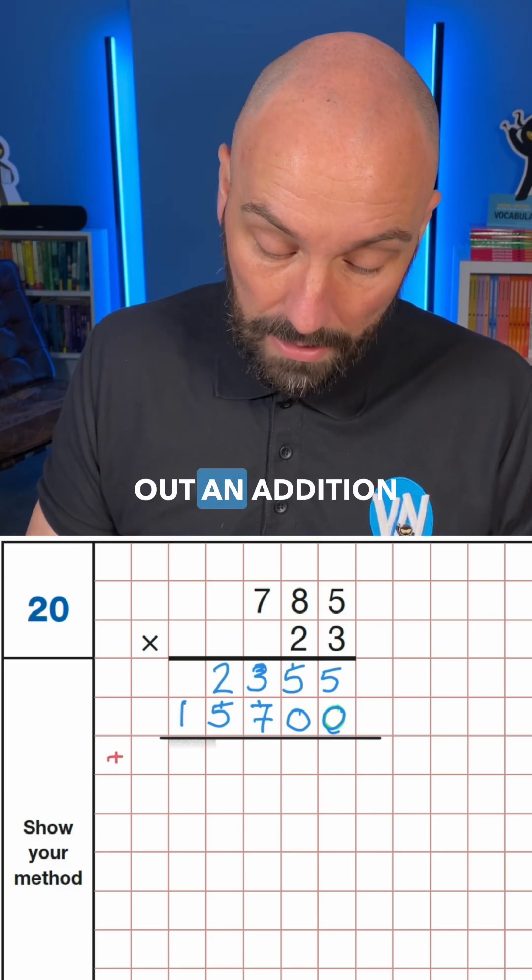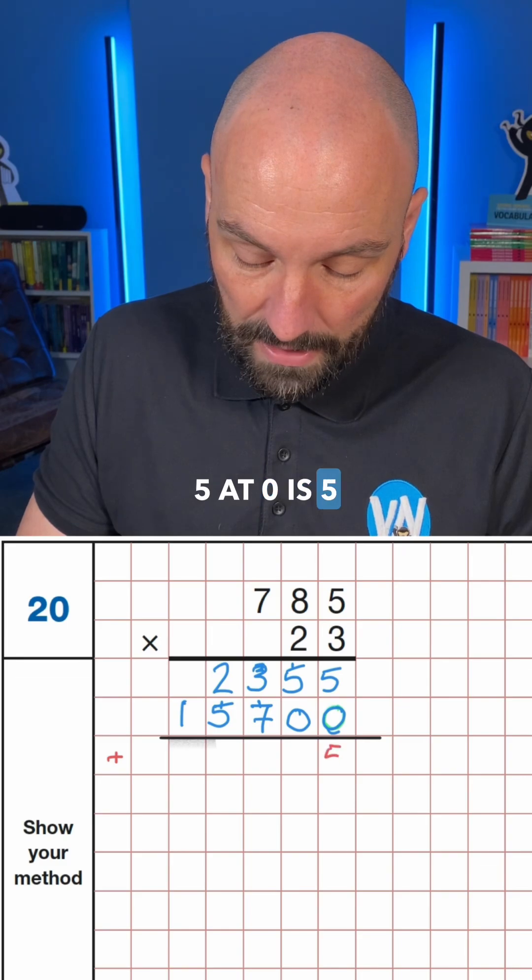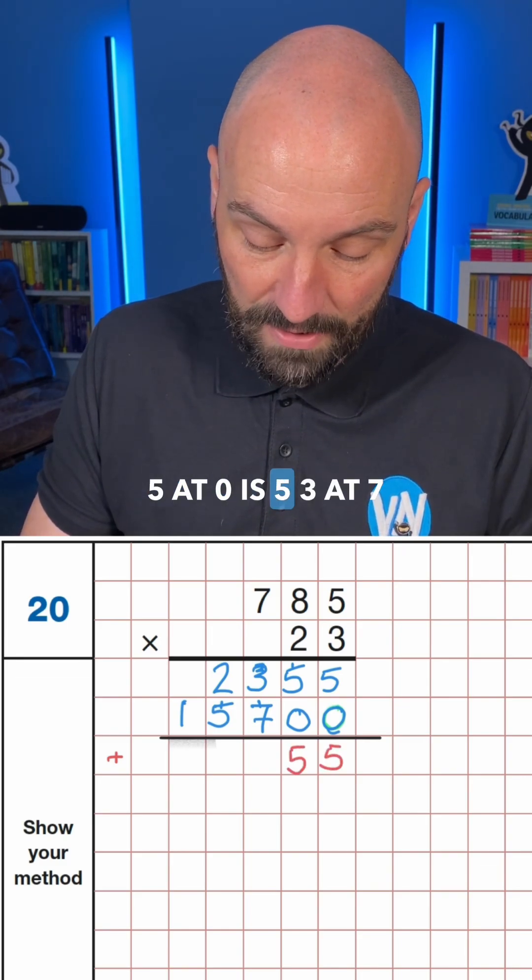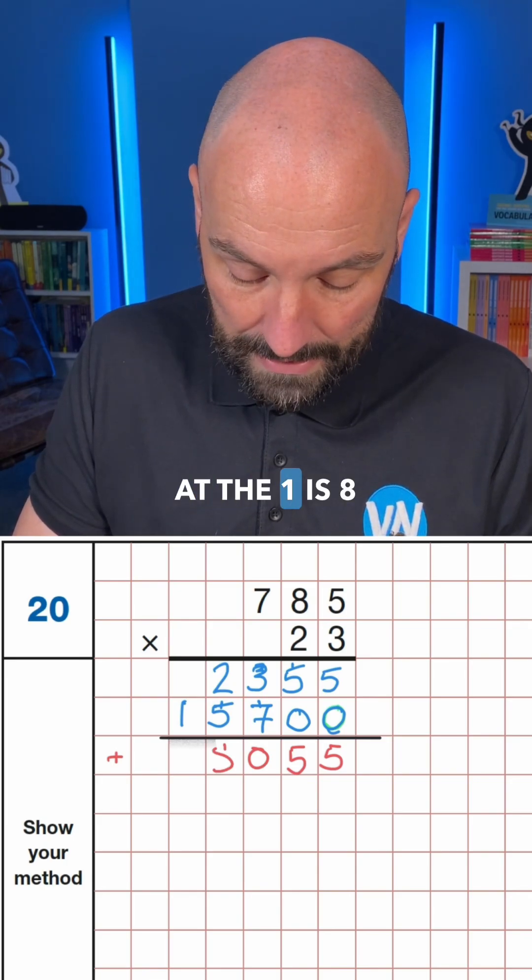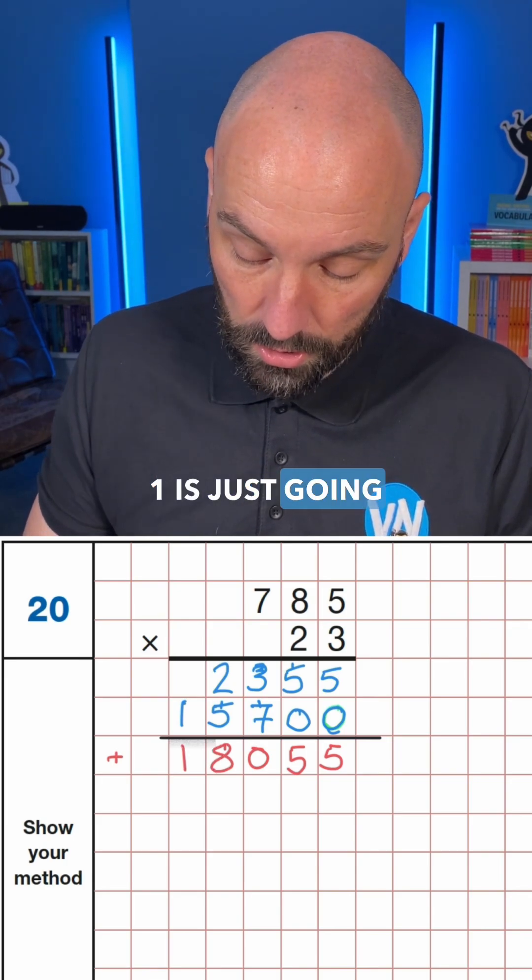And then at that point, we can carry out an addition. 5 add 0 is 5, 5 add 0 is 5, 3 add 7 is 10, carry the 1. 2 add 5 is 6, add the 1, is 8. And then that 1 is just going to drop down.